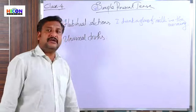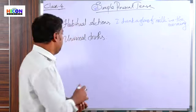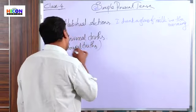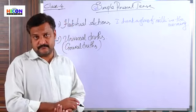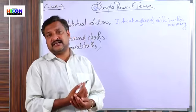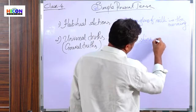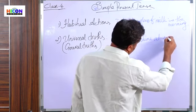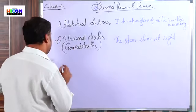Then simple present tense is also used for universal truths — something that is true throughout the world, also called general truths. For example, the stars shine at night. Can we see any stars in the daytime? No. So we say 'the stars shine at night' using simple present tense.